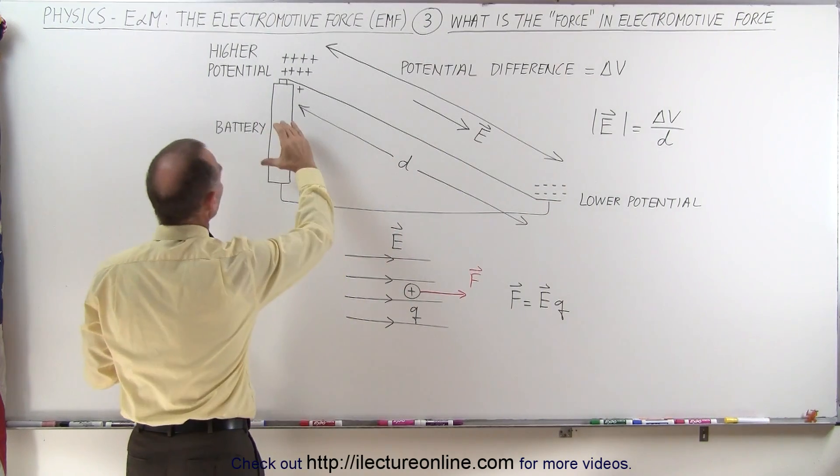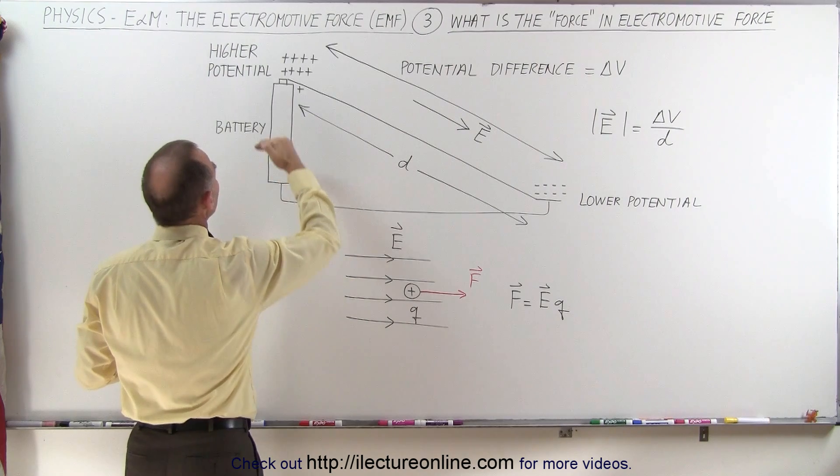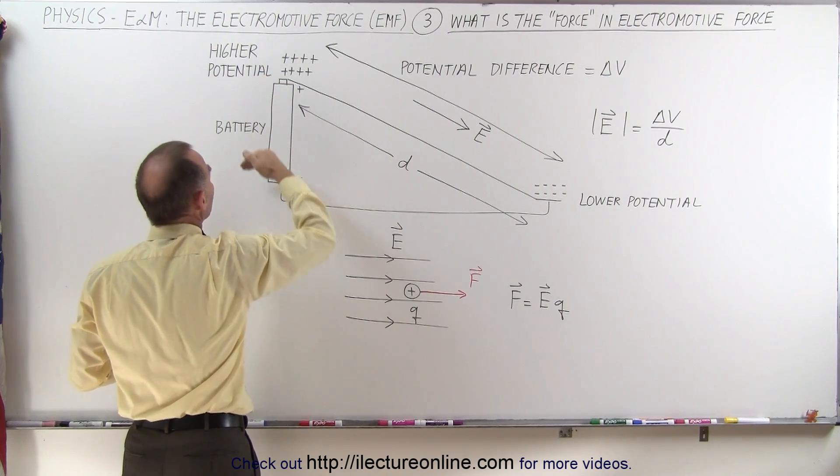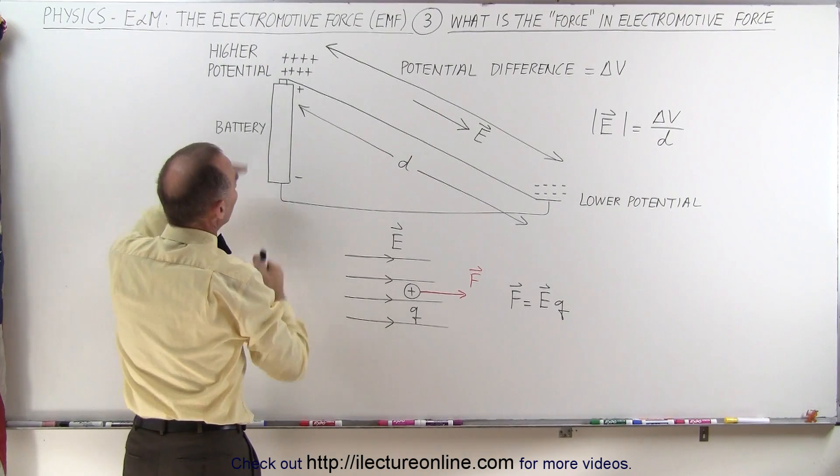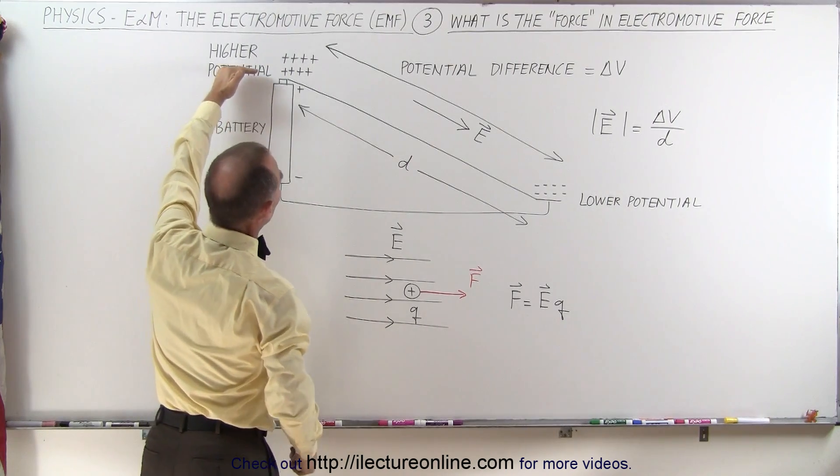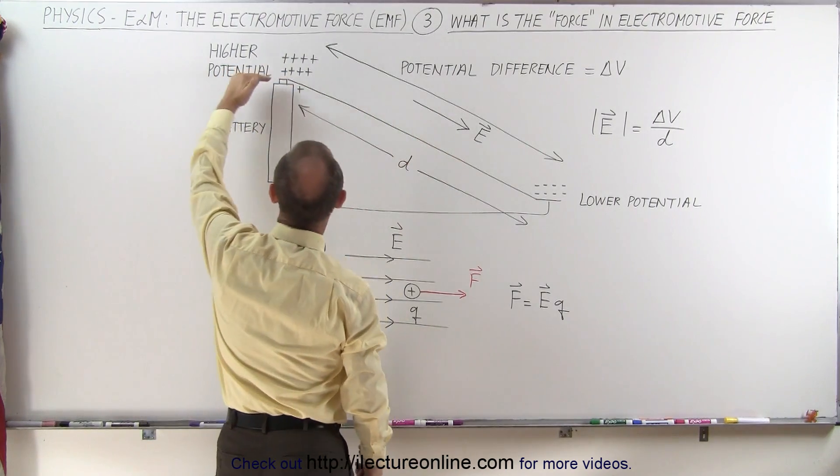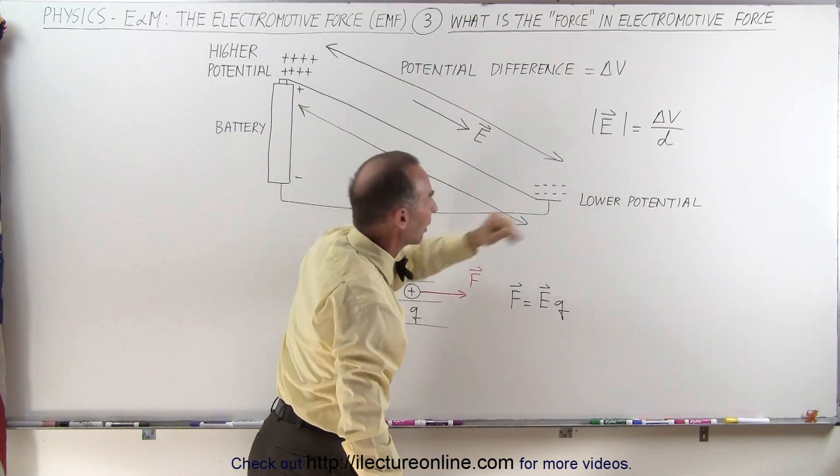Let's assume that we have a battery here which raises the potential energy of charges and therefore it raises the potential, the voltage of these charges or where these charges are at. And then as they run down the circuit they go from a higher potential down to a lower potential.